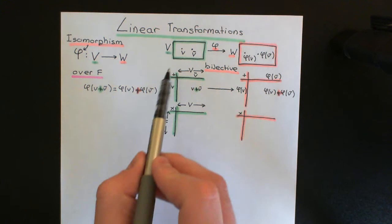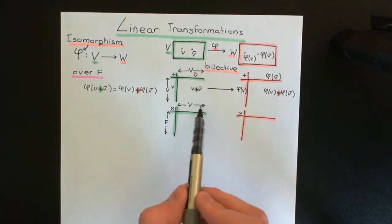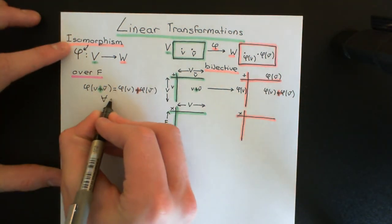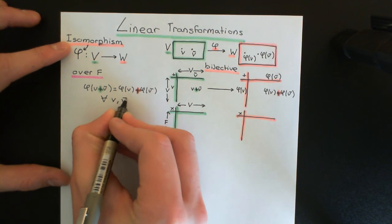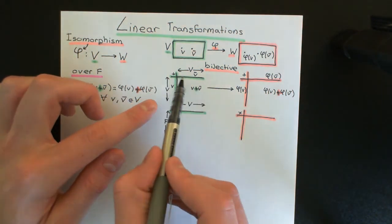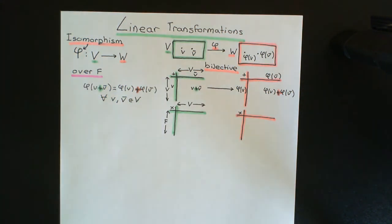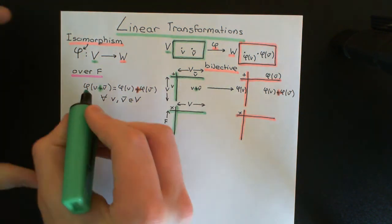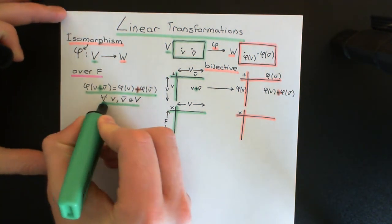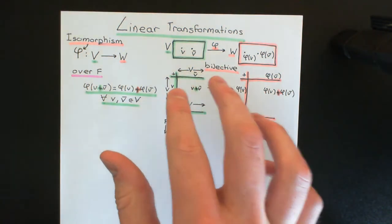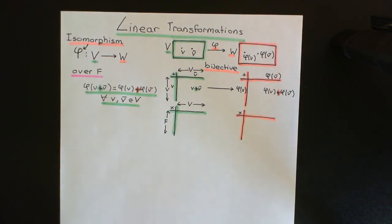This line is the nice simple way we can describe the idea that we want the mapping phi to relabel up our addition composition table and turn it into the addition composition table on our codomain vector space. We need it to be true for absolutely every possible entry in this addition composition table, because we can vary v and v-bar over all entries of the vector space capital V and therefore come across every single entry.